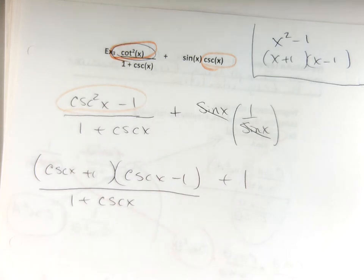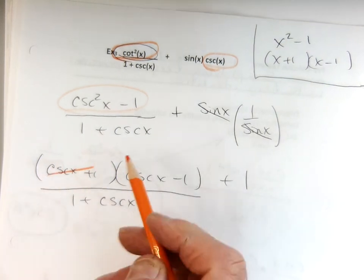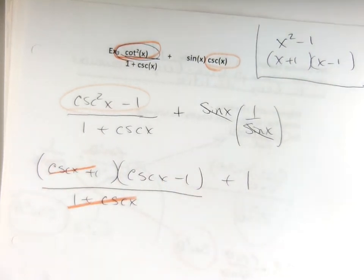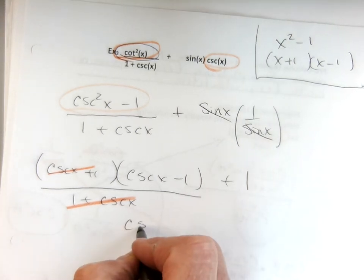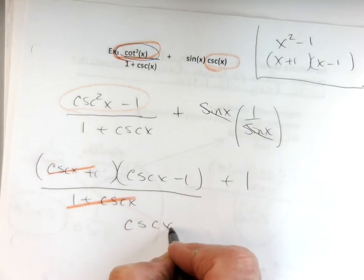All over one plus cosecant of x. Now, I bet you can probably finish it up, couldn't you? What should I do next? Boom, cosecant plus one with one plus cosecant of the same thing, right? And then what am I left with?